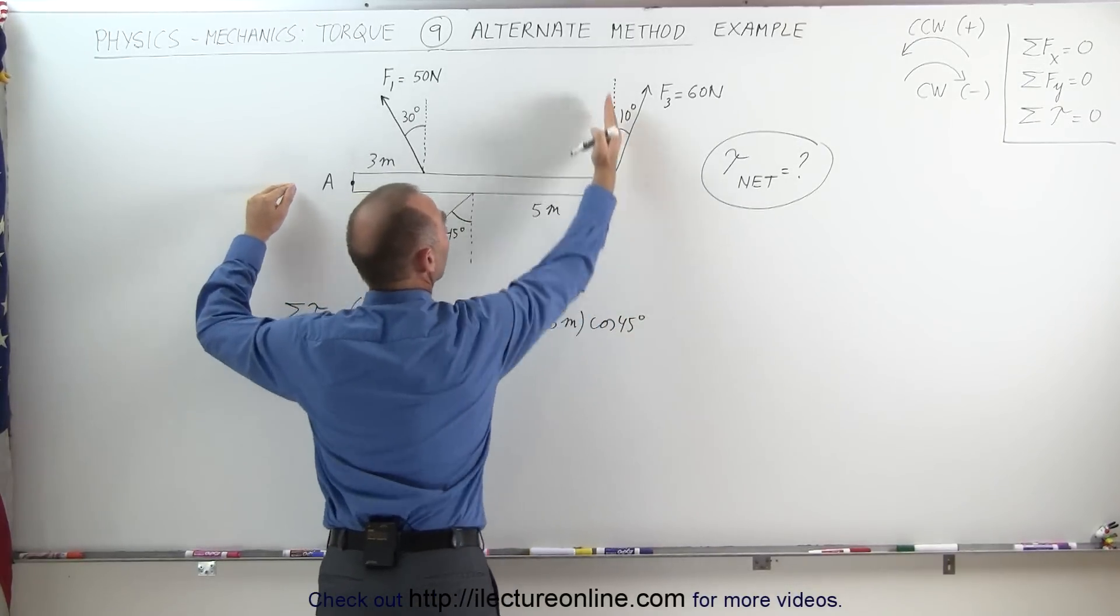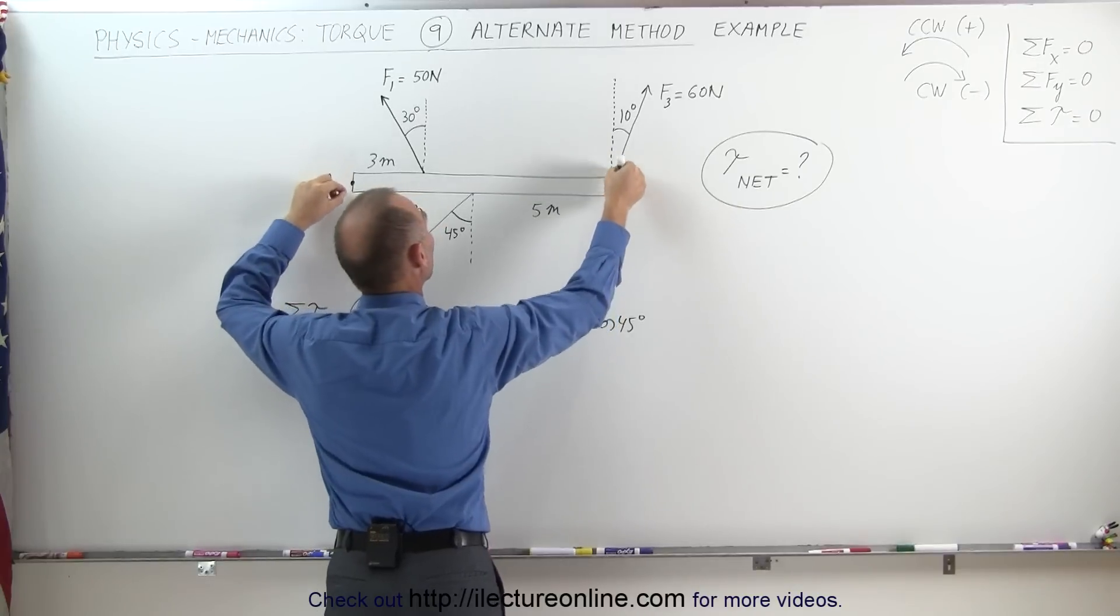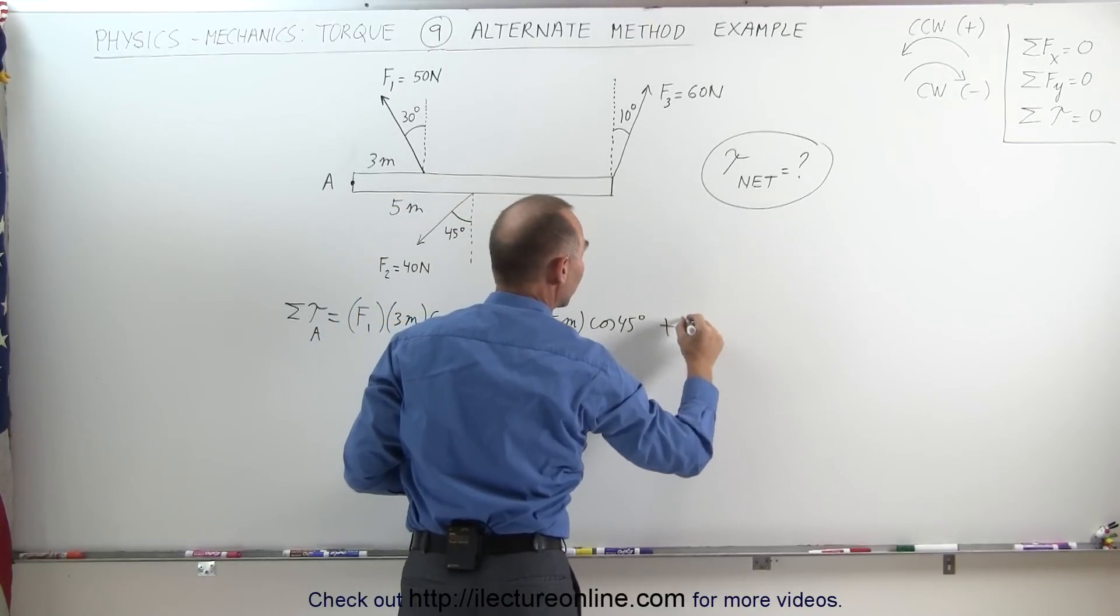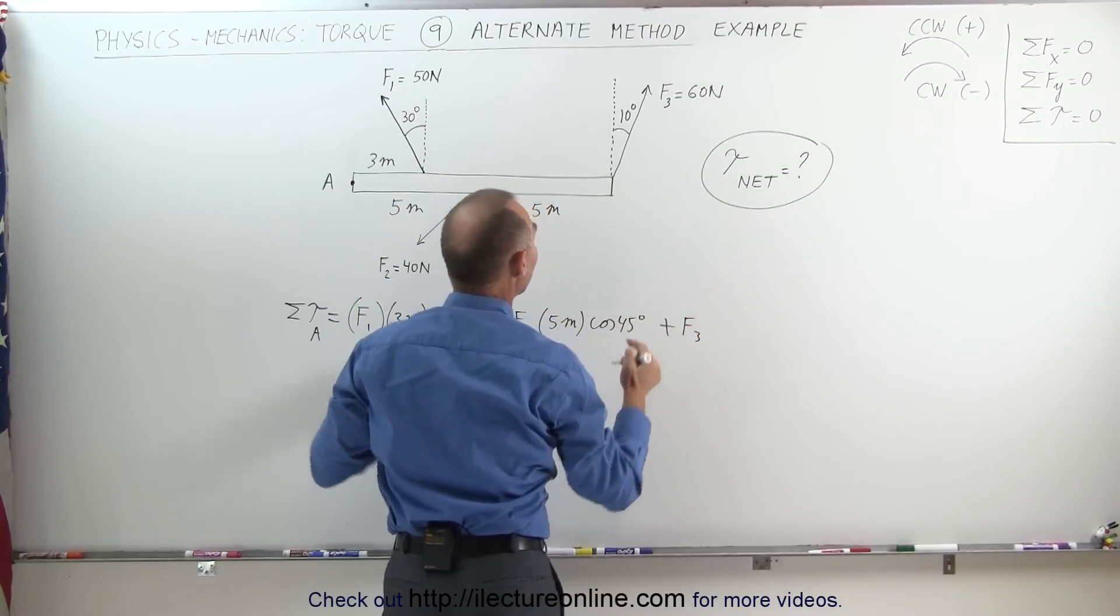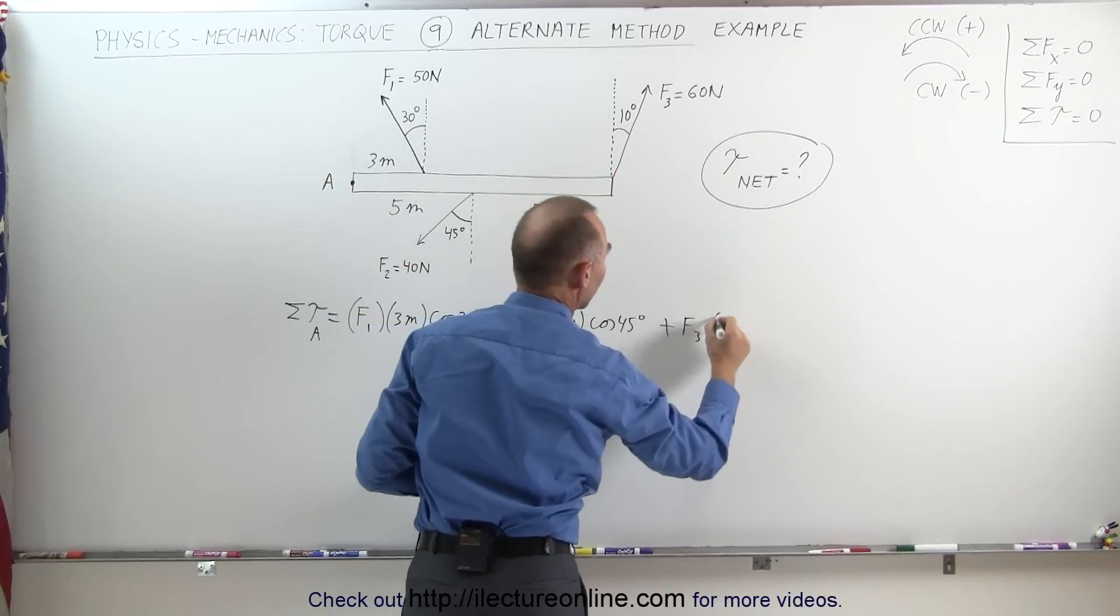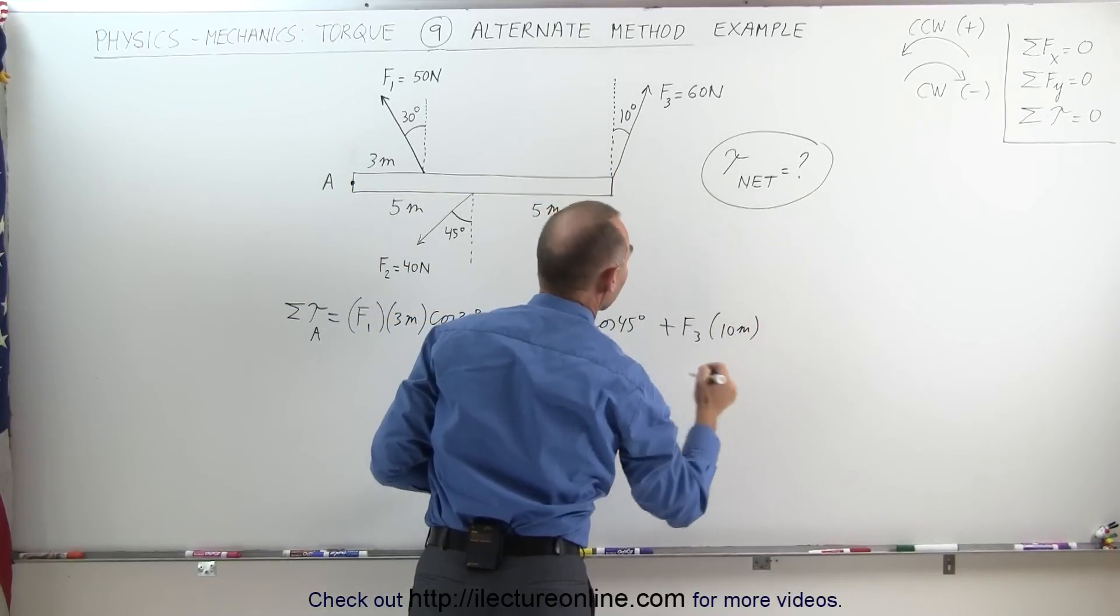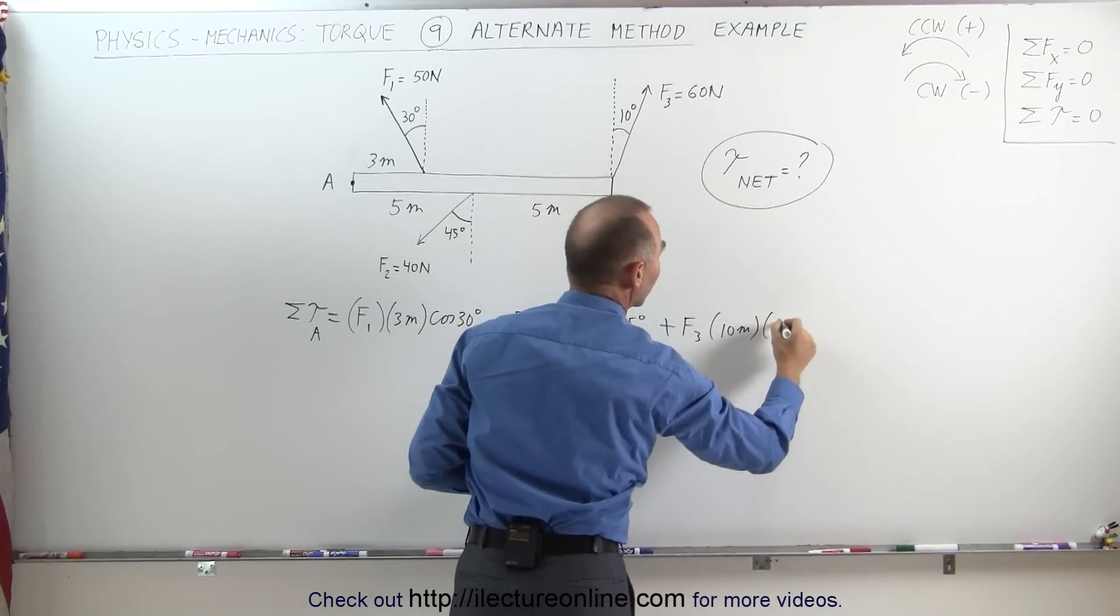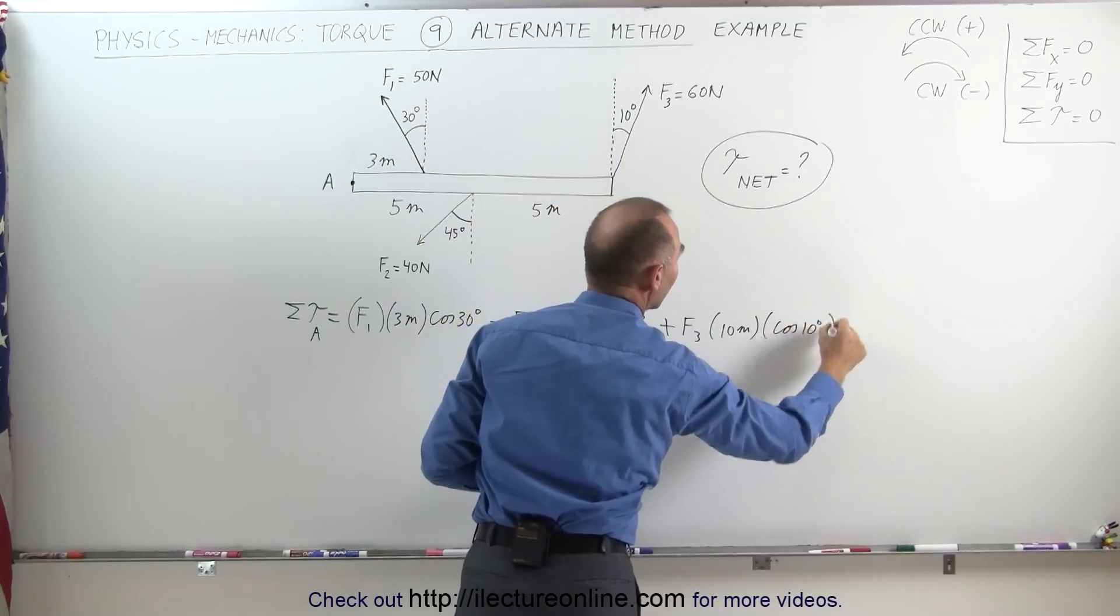The third force: again, the vertical component would cause the beam to rotate counterclockwise, that's a positive torque. Positive F3 times the distance from where the force is acting to the pivot point, which is 10 meters, times the cosine of the angle between the vertical and the force: cosine of 10 degrees.